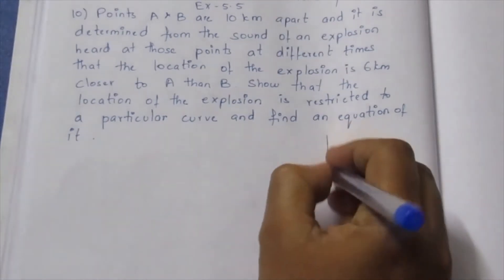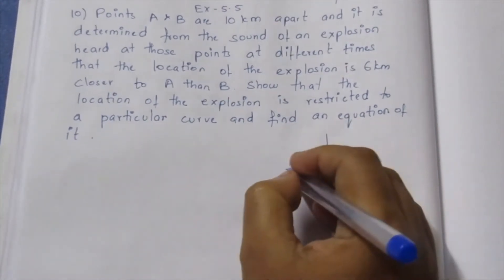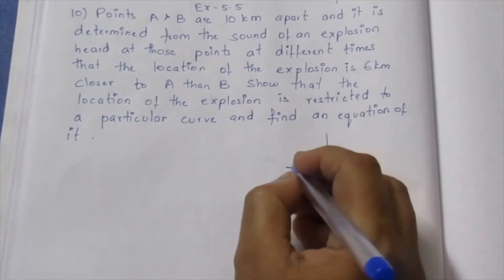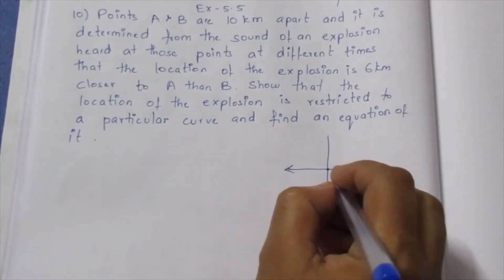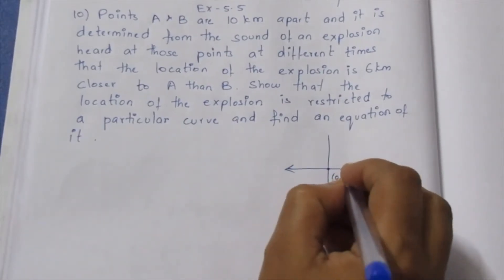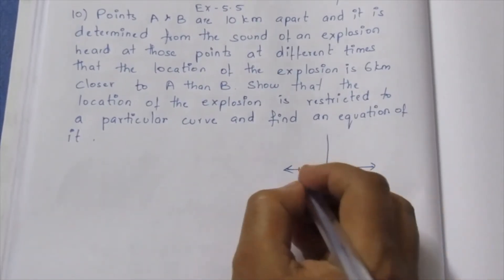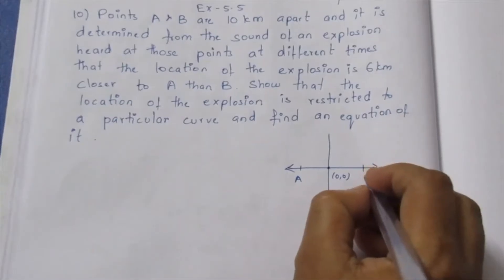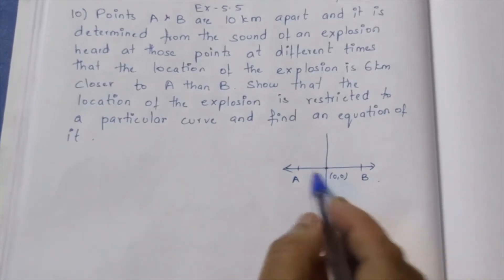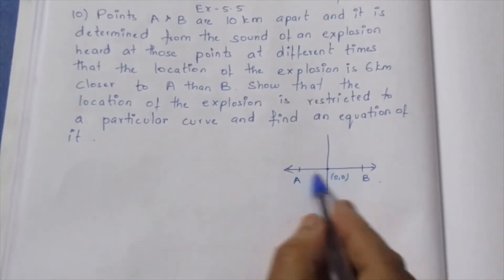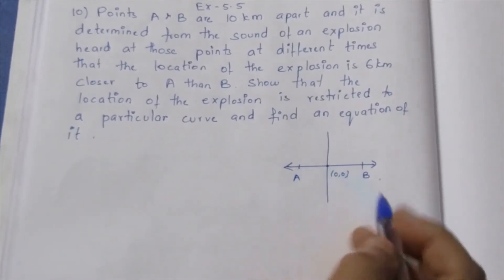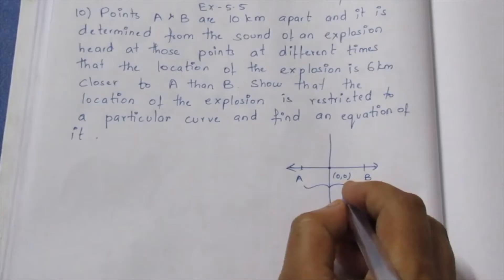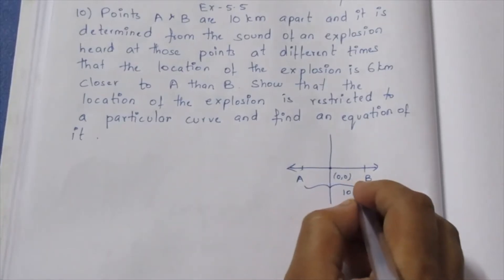Set up x-axis and y-axis. The midpoint is at the origin (0, 0). A and B are placed on the x-axis, with A and B being 10 km apart.